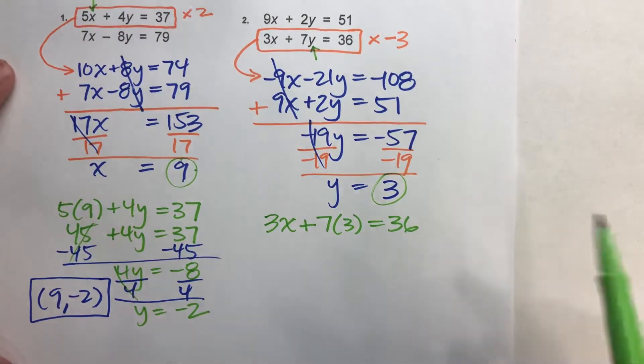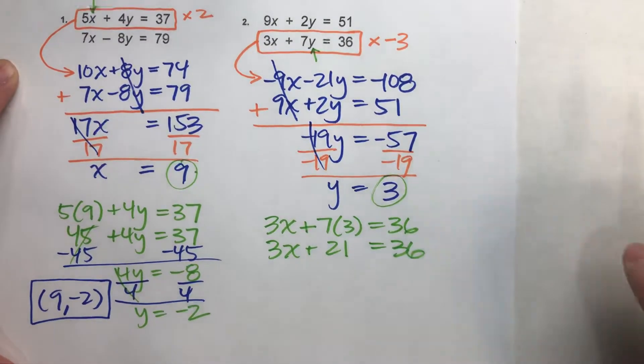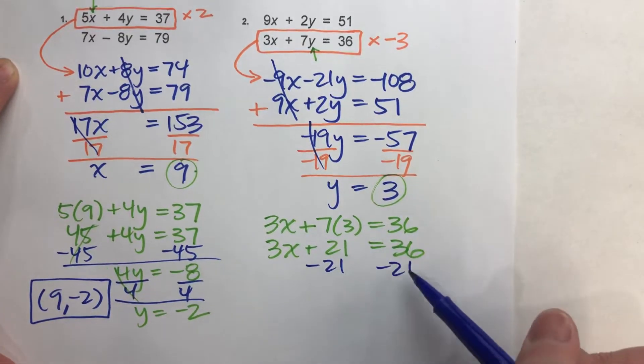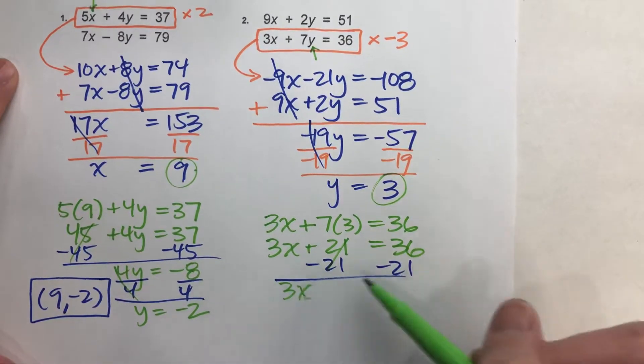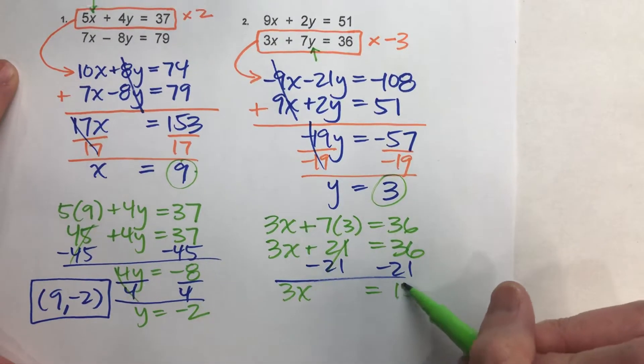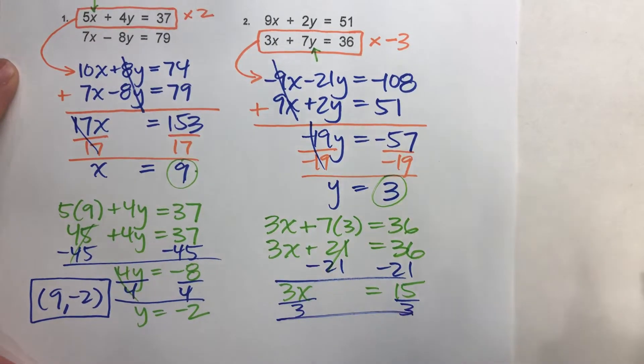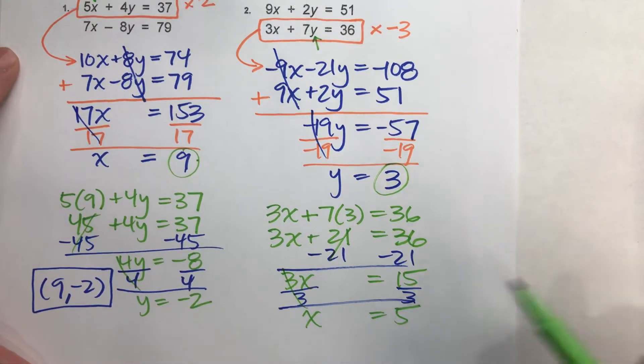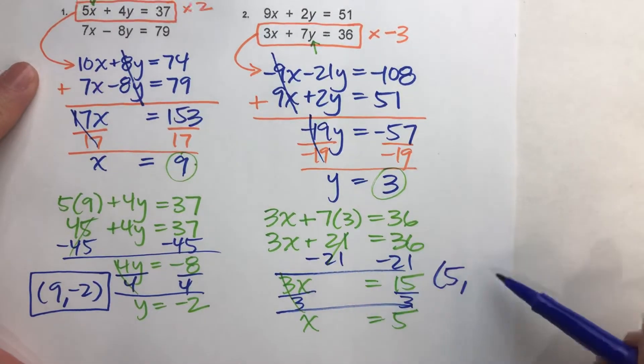Simplify this a bit. 3x plus 21 equals 36. Now, to solve for x, I'll subtract 21 from both sides. I end up getting 3x equals 15. Almost there. Divide both sides by 3. I end up getting x equals 5. So we just got our solution there. x is 5, y is 3. Boom.